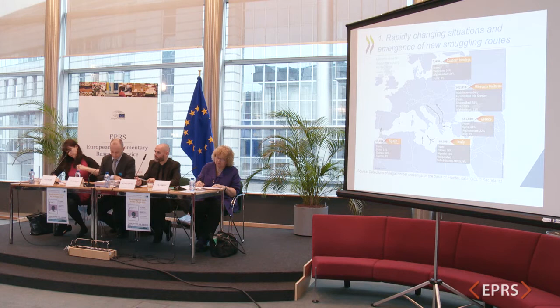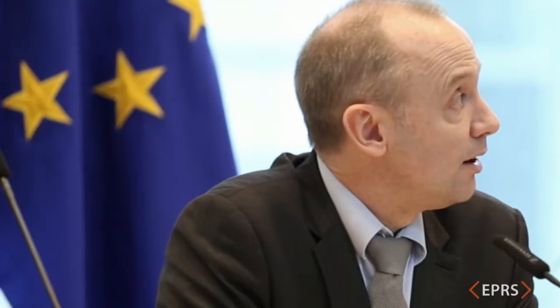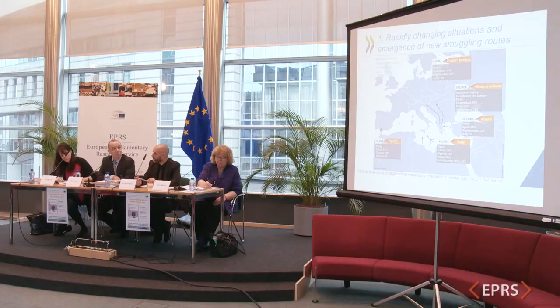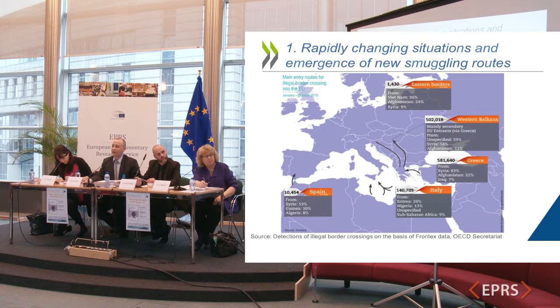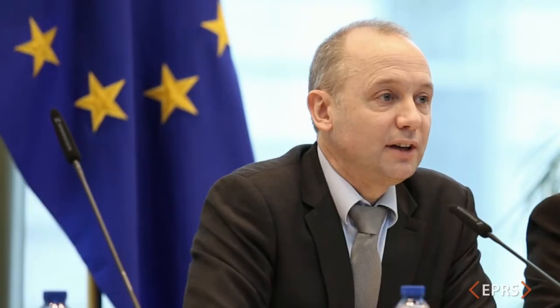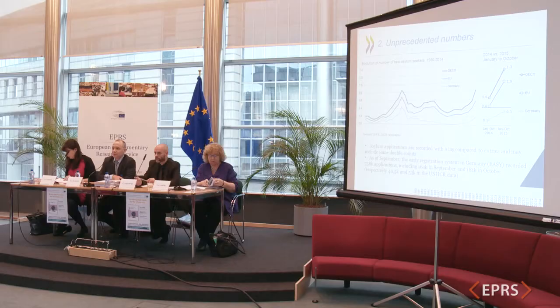One difference with previous refugee crises, notably in the early and mid-1990s, is the rapidly changing situation and the emergence of new migration or smuggling routes. We've seen a shift from the central Mediterranean route, which has been there for a very long time, to the eastern Mediterranean route — from Turkey to Greece and then through the Balkans. The second difference is that the numbers are unprecedented, even if we must be clear that these numbers are still uncertain.